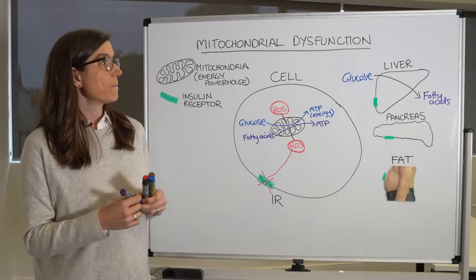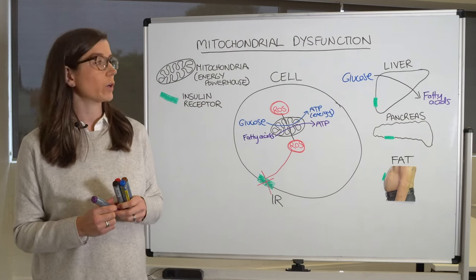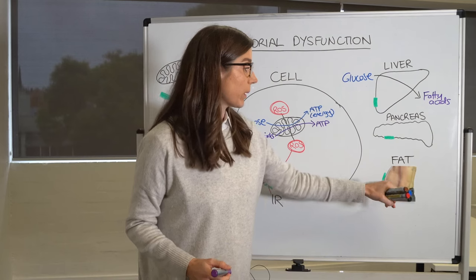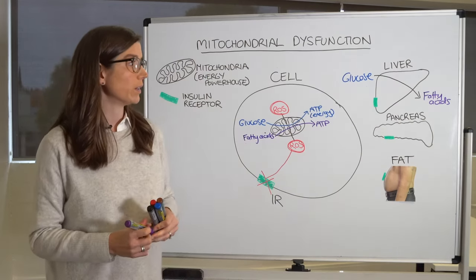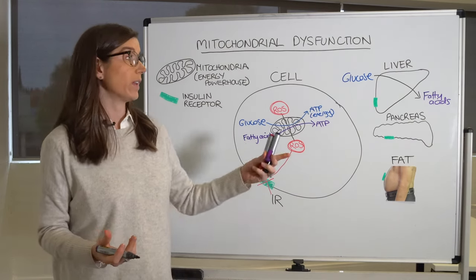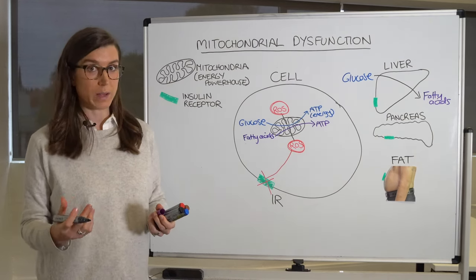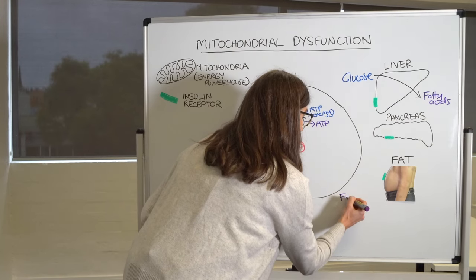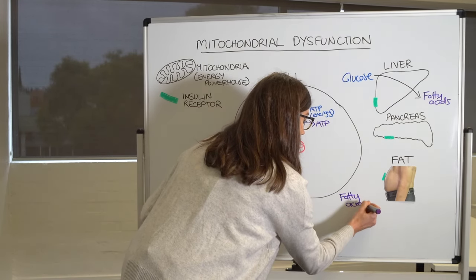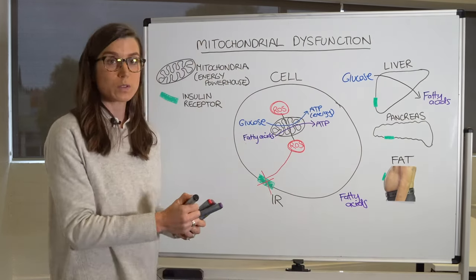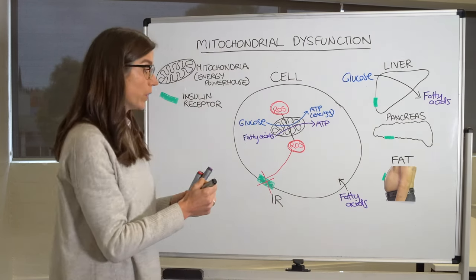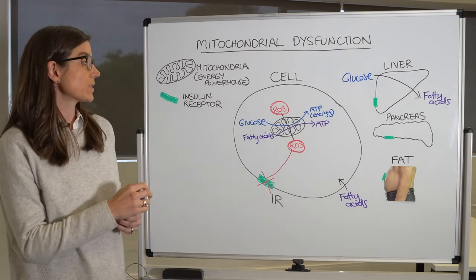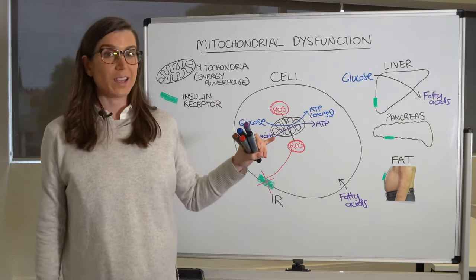The thing is, these fatty acids don't need insulin to get into cells — they don't require insulin receptors. A safer place for fatty acids is in subcutaneous fat; we really don't want them building up in your organs. But if they have nowhere to go, these fats start building up in cells where they're not meant to be. Because they can enter cells without insulin, this further leads to insulin resistance.